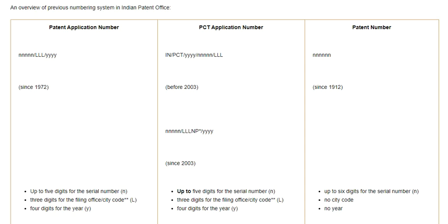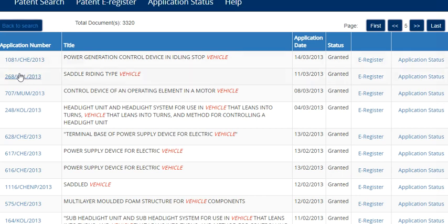Until 31 December 2015, the numbering system for patent applications had specific formats for ordinary applications, PCT applications, and the patent number. For an ordinary application, the format was 5N/3L/4Y — where 5N is the serial number (up to five digits), 3L is the office code, and 4Y is the year of filing. For example: 1081 is the serial number, CHC is the office code, and 2013 is the year of filing.